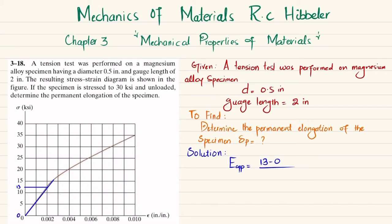...divided by strain. At this point the strain is 0.002, so 0.002 minus original strain which is again 0. When you solve this, you will get modulus of elasticity E equal to 6.50 times 10 to the power 3 ksi.